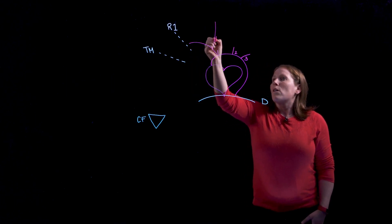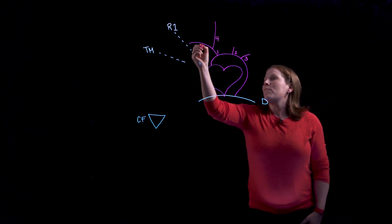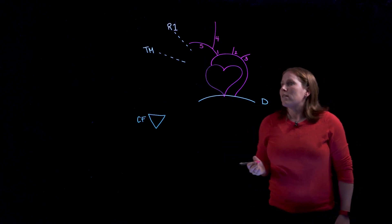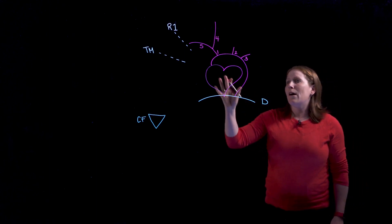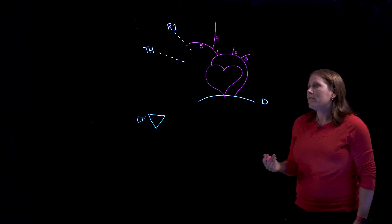Okay, number four is going to be the right common carotid artery and number five will be the right subclavian artery. So you can see now that we ultimately do have four branches and therefore we have symmetry.